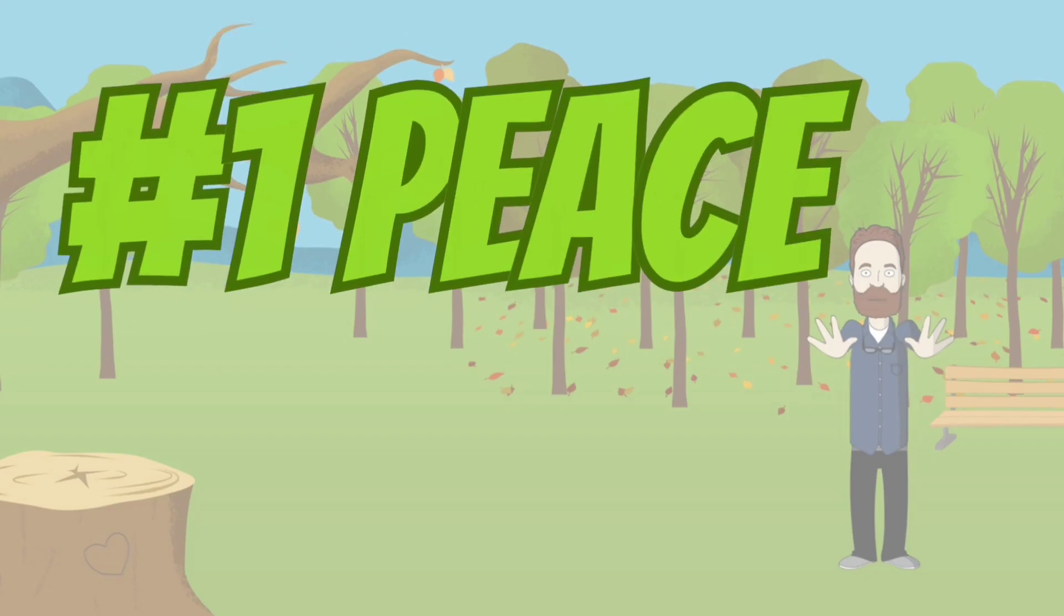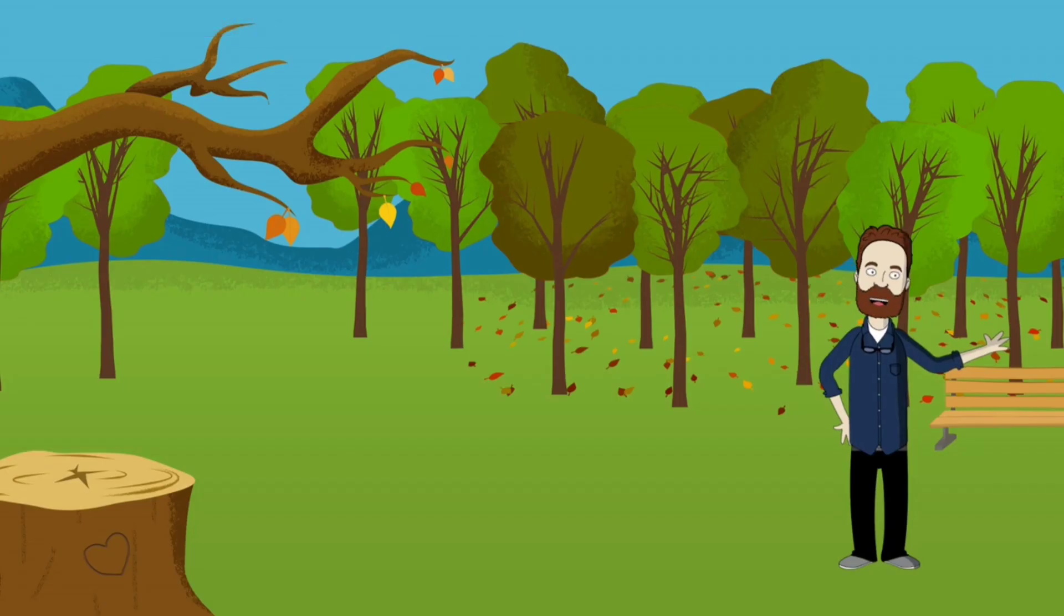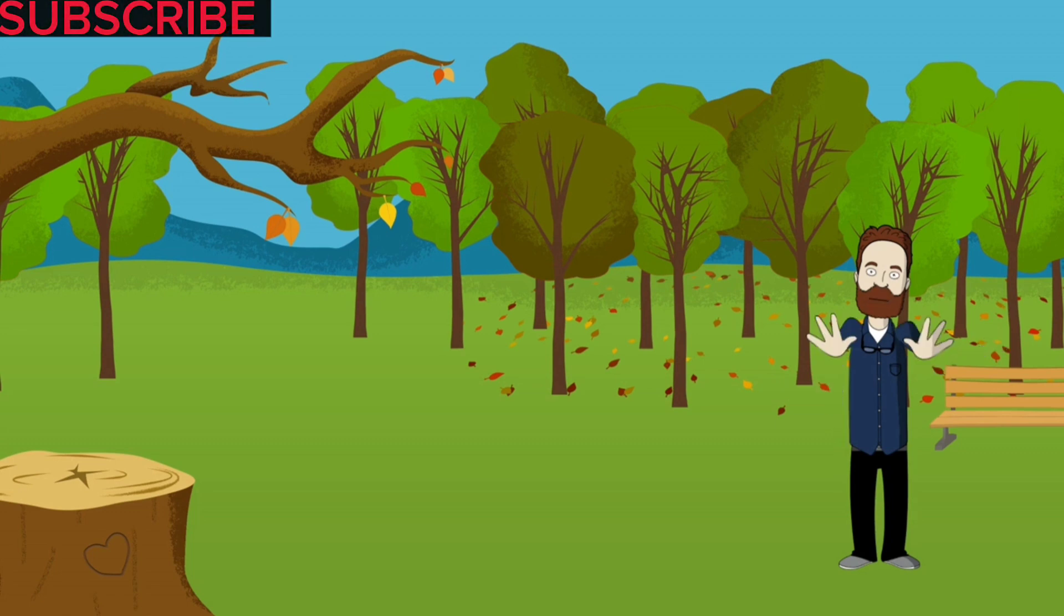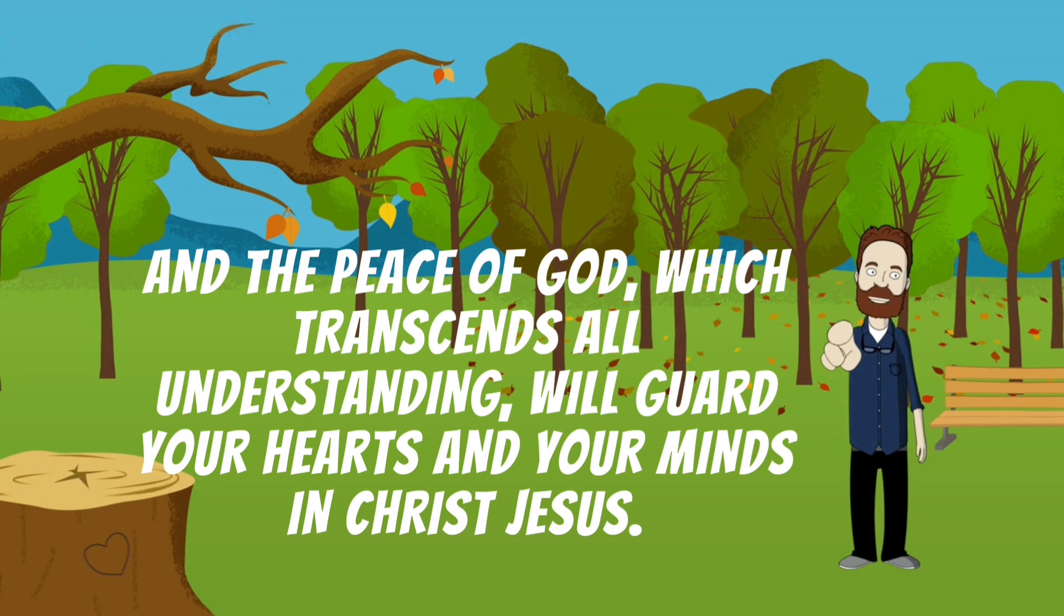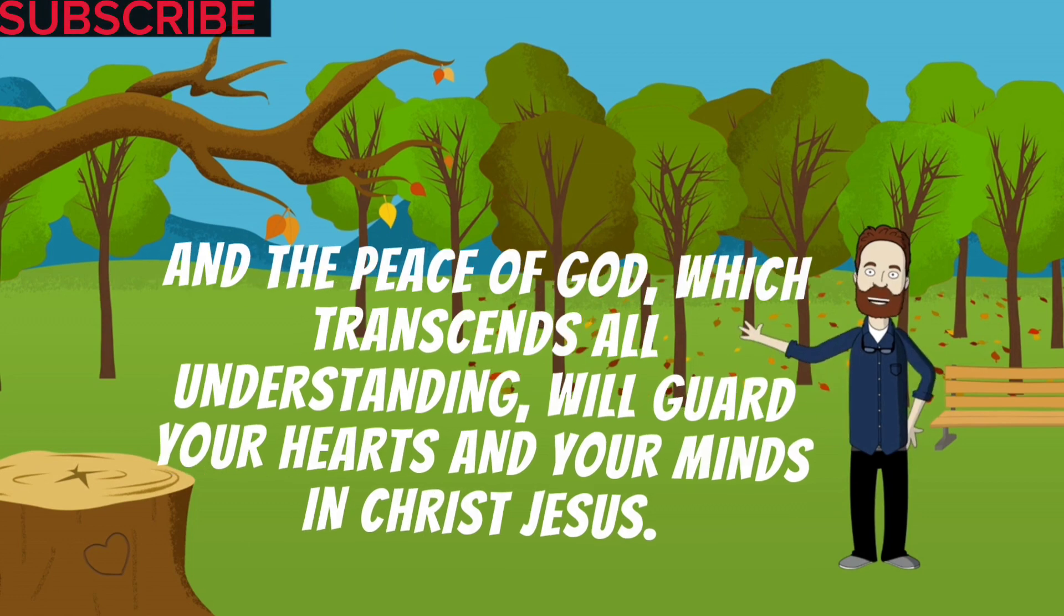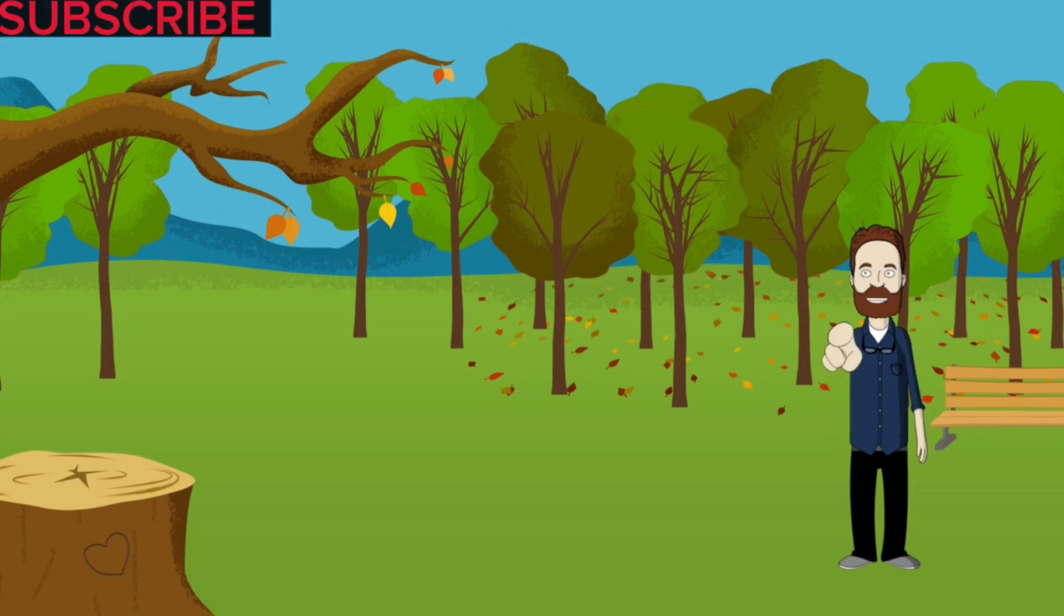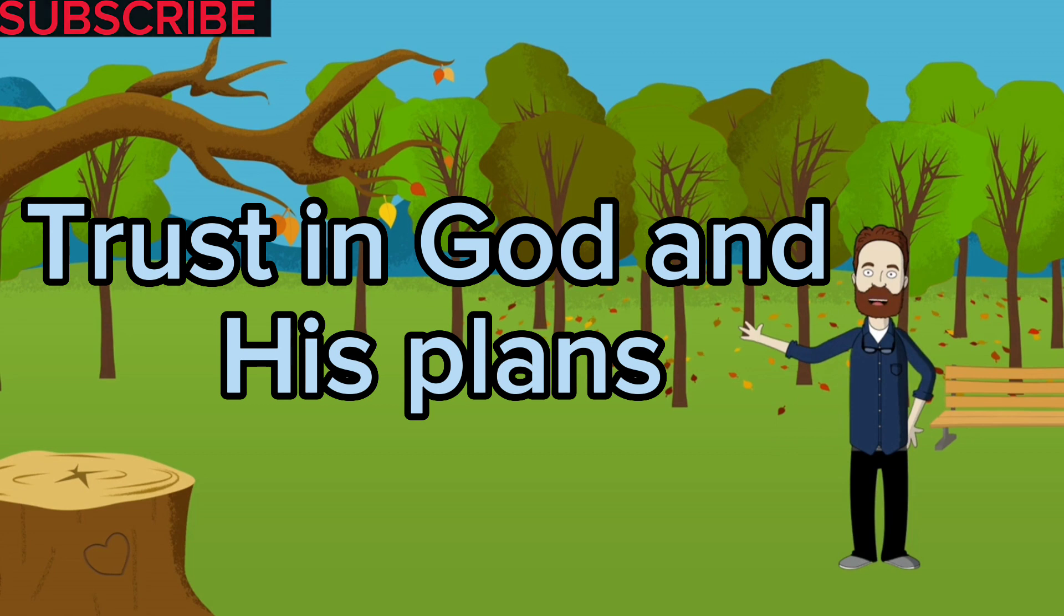Sign 1: Peace. The first sign that you're on the right path according to the Bible is peace. Philippians 4:7 says, 'And the peace of God which transcends all understanding will guard your hearts and your minds in Christ Jesus.' This peace is not dependent on our circumstances, but comes from our trust in God and His plan for our lives.